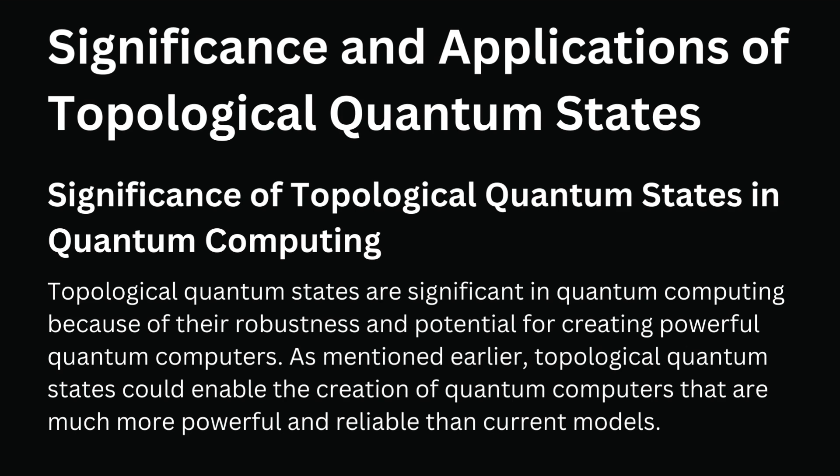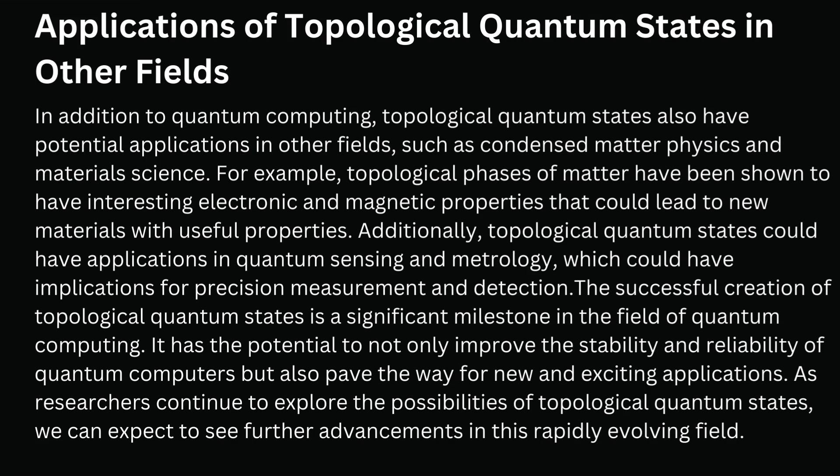Significance and Applications of Topological Quantum States. Topological quantum states are significant in quantum computing because of their robustness and potential for creating powerful quantum computers. They could enable the creation of quantum computers that are much more powerful and reliable than current models. In addition to quantum computing, topological quantum states also have potential applications in other fields, such as condensed matter physics and materials science. Topological phases of matter have been shown to have interesting electronic and magnetic properties that could lead to new materials with useful properties. Additionally, topological quantum states could have applications in quantum sensing and metrology, which could have implications for precision measurement and detection.